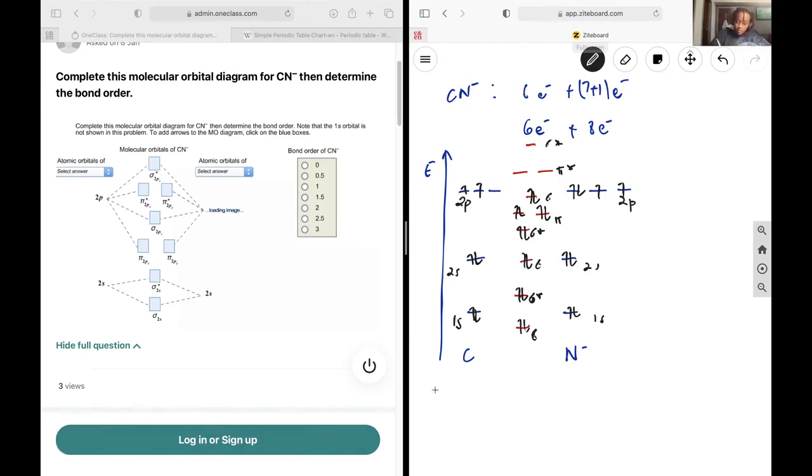Next up I want to determine the bond order, and that is going to be the number of electrons in bonding orbitals minus the number of electrons in antibonding orbitals all over 2. My bonding orbitals have 2, 4, 6, 8, 10. So 10 in bonding orbitals minus 4 in antibonding orbitals over 2, and that is going to be 6 over 2, so 3.